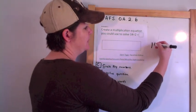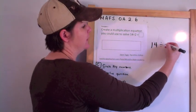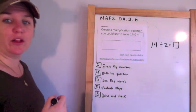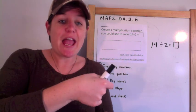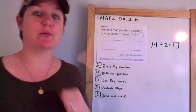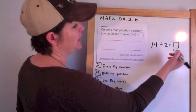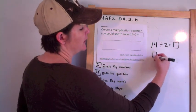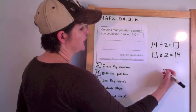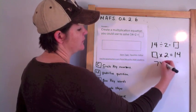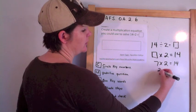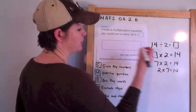So we have 14 divided by 2 equals what? We need to know that multiplication and division are inverse operations, meaning you can just flip them around. So we could write box times 2 equals 14, and what goes inside the box would be 7. So 7 times 2 equals 14, or 2 times 7 equals 14. Either one would work.